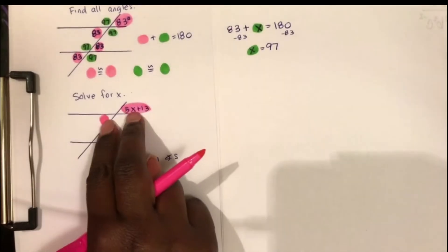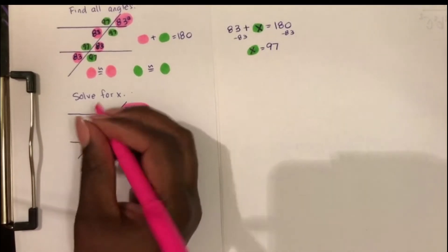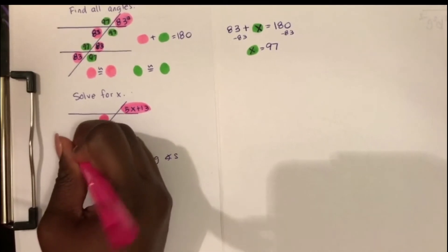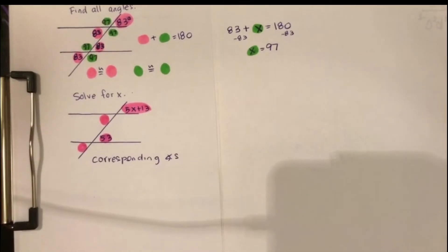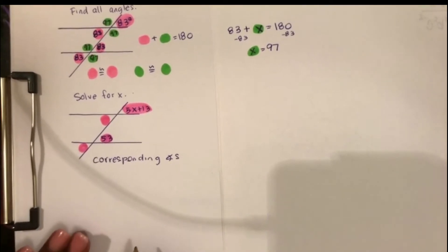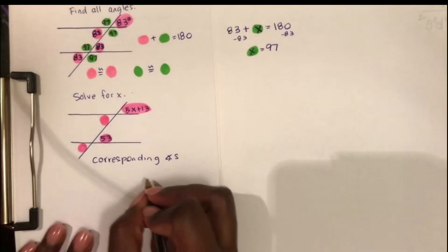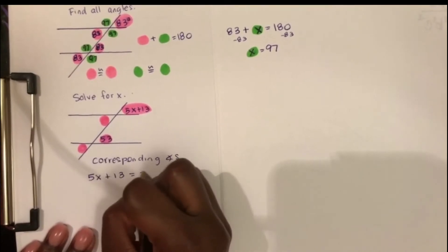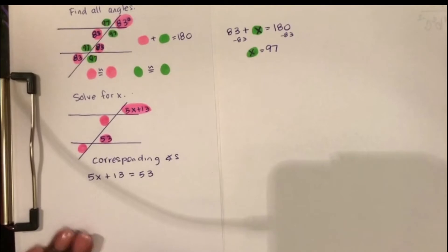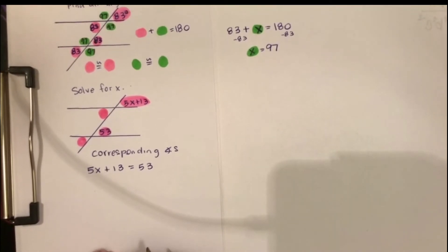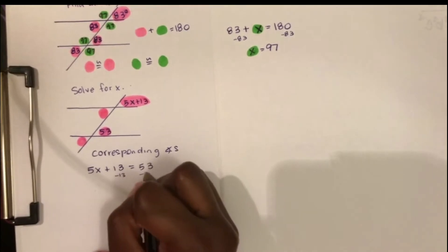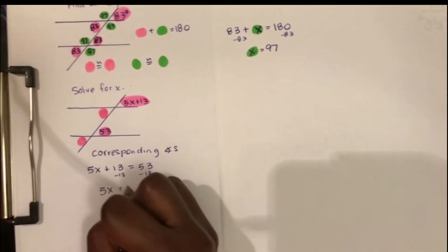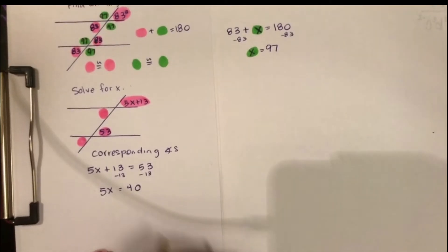Now I'm going to color code my picture to figure out whether the corresponding angles are congruent or supplementary — supplementary meaning their sum equals 180. I highlight one angle, then its vertical angle, then copy the same pattern on the second intersection. Based on our colors, the two angles they gave us are both pink. Pink angles are congruent, so to solve for x, we set them equal to each other and solve the multi-step equation. First subtract 13 from both sides, then divide by 5 — so x equals 8.